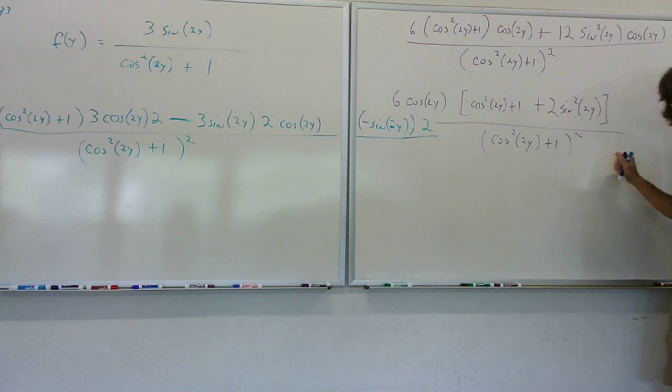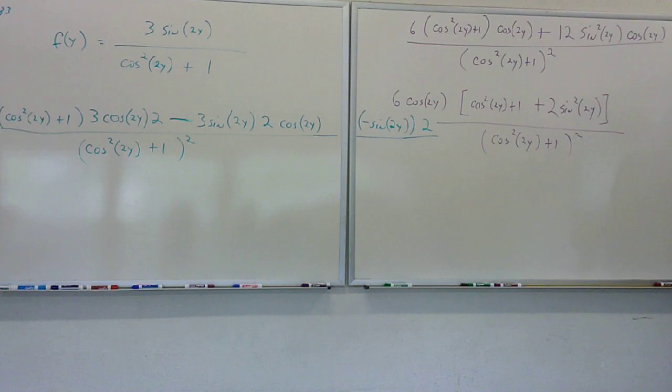Now honestly, if you wanted to, you could have distributed that out at the very beginning, and then factored cosine 2y out of everything, and you would have ended up in the same exact place. It would have still came out to the same start. And I even thought about doing that when I worked it earlier.